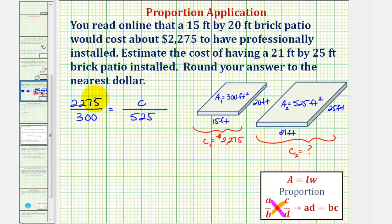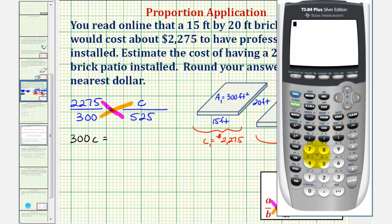So in our case, I always like to find the cross product with the variable first, so we'd have 300 times C, or 300C, must equal 2,275 times 525. So this would give us the equation 300C must equal this product here, so 2,275 times 525, which is 1,194,375.